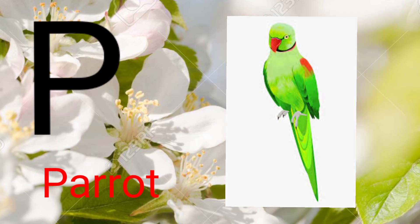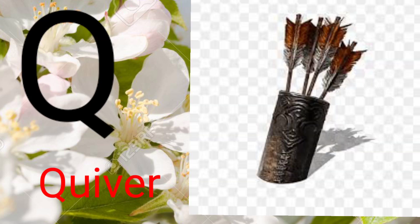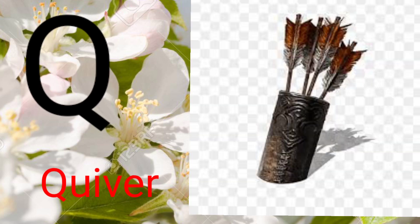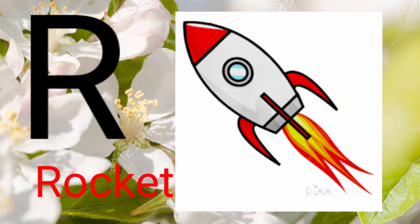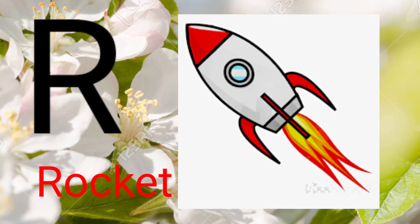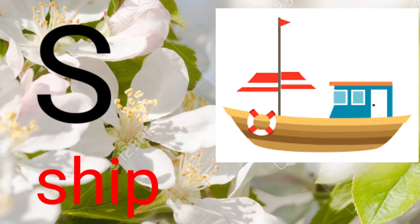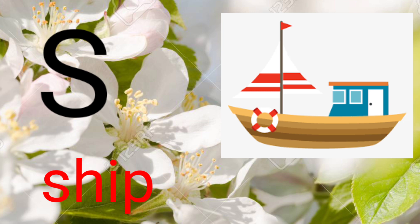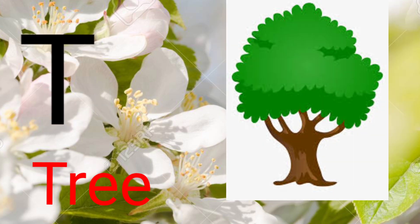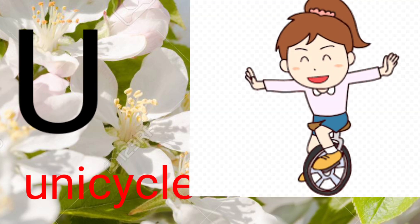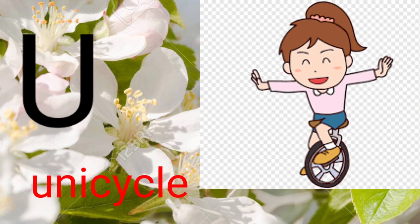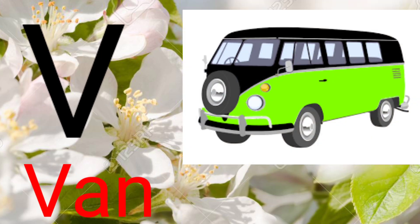B for parrot, U for cuber, R for rocket, S for sheep, T for tree, U for uncycle.